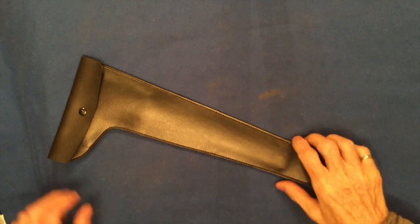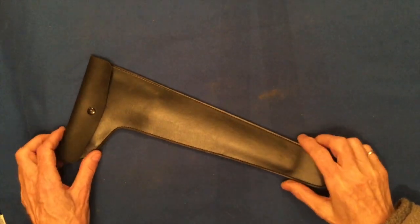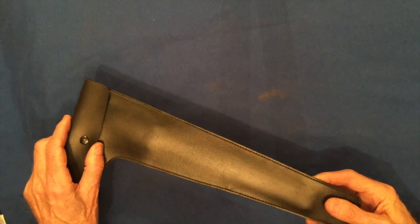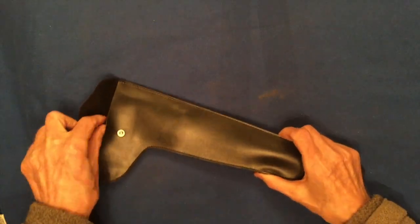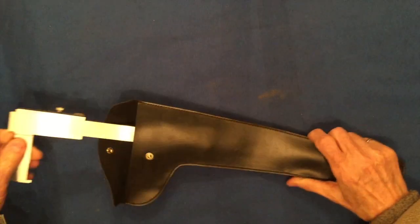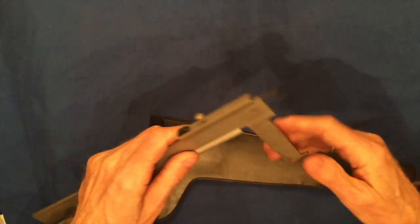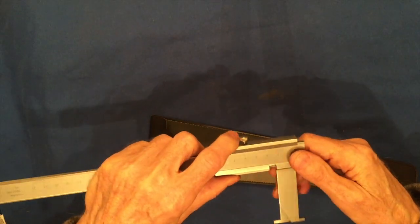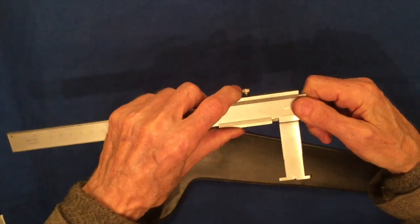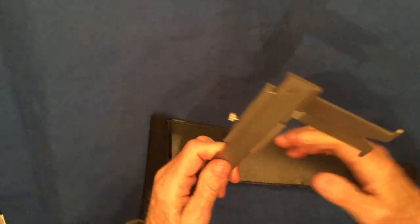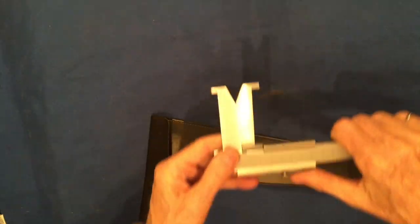I bought this caliper in Germany on a swap meet, motorcycle swap meet. First, it really fooled me. I looked at that and I said, well, it's made for left-handed people. Then I realized that no, that's an inside measurement. That's measuring behind the lip.